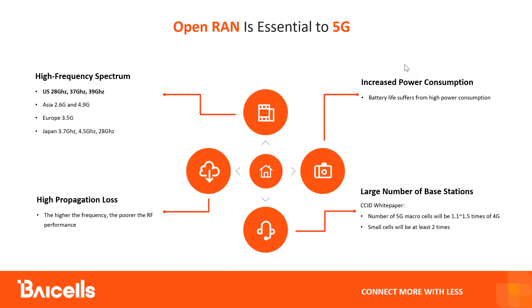Open RAN is essential to 5G. When looking at 5G, Open RAN is a must because 5G networks are mostly deployed on high frequency spectrums. In the US, we have frequency bands in the 28 GHz, 37 GHz, and 39 GHz ranges. In Asia, mid-range spectrums like 2.6 and 4.9 GHz are used. In Europe, 3.5 GHz is available. In Japan, 3.7, 4.5, and 28 GHz are available — all on the higher end of the frequency spectrum.